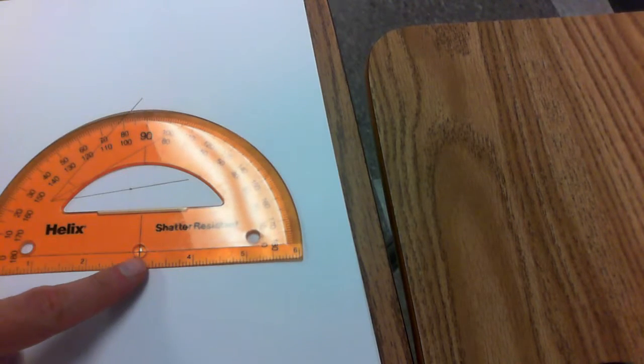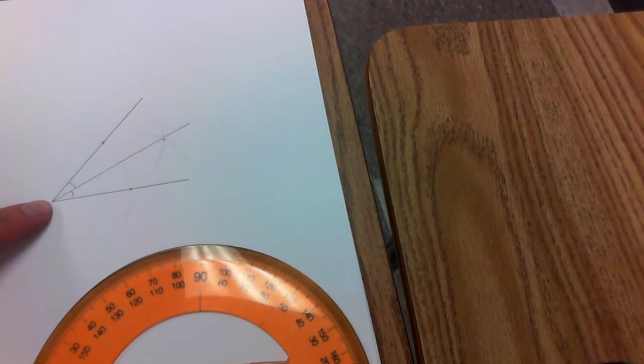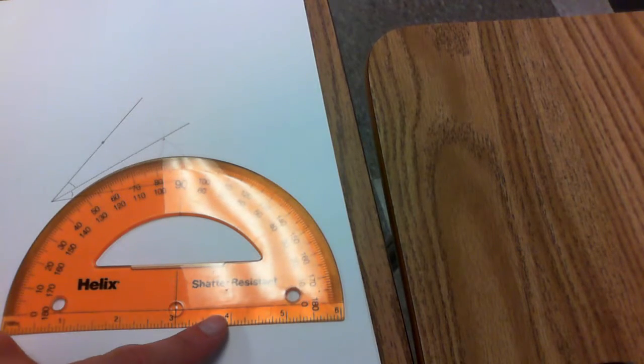The way that we do that is we're going to take this little crosshair here and place it at the vertex of our angle right there. In addition to that, we're going to line up one arm of our angle along this line.